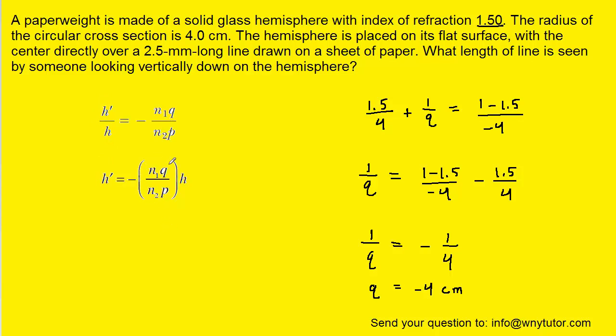And then at this point, we can plug in the known values. Just keep in mind that h would be the original length of the object itself, and that was given to us as 2.5 millimeters.